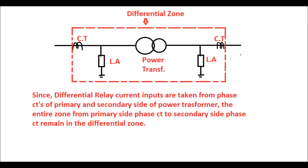The differential zone of the power transformer is shown in this diagram. Between the CTs on either side of the power transformer, there exist the HV and LV windings. Since the differential current inputs are taken from the CTs on the primary and secondary sides, the entire zone from the primary-side CT to the secondary-side CT remains within the differential zone. If any fault occurs within this zone, the relay shall operate. Any fault outside this differential zone produces a through fault current, and the relay must maintain a stable condition during through fault current.